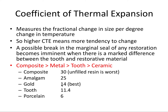Gold is the best material here because it's closest to the tooth's coefficient of thermal expansion. A useful way to remember the order from highest to lowest coefficient — composite, metal, tooth, ceramic — is the acronym C-O-T-E: C for composite, O for metal (lining up with 'of'), T for tooth (lining up with 'thermal'), and E for ceramic (lining up with 'expansion'). Board exam questions may ask you to rank these materials, so remembering C-O-T-E is very helpful.